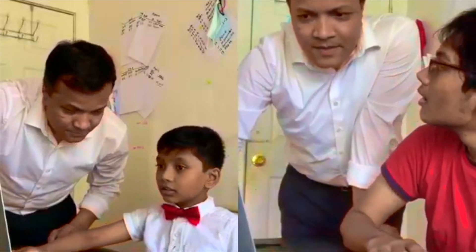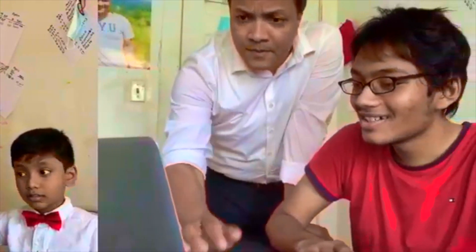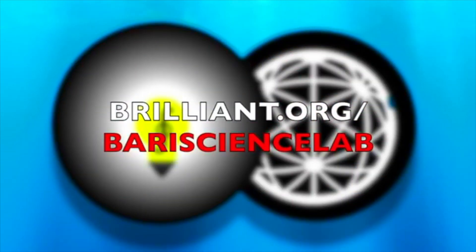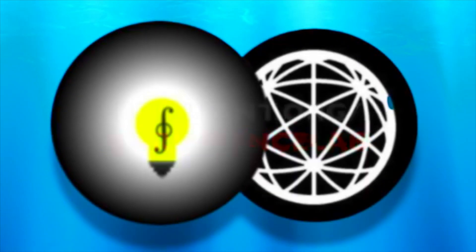Visit Brilliant.org slash Barry Science Lab today. And the first 50 of you to use that link will get a 20% discount on the Brilliant annual subscription. Don't forget that you, too, can become the next Einstein. So, let's fall in love with math and science.